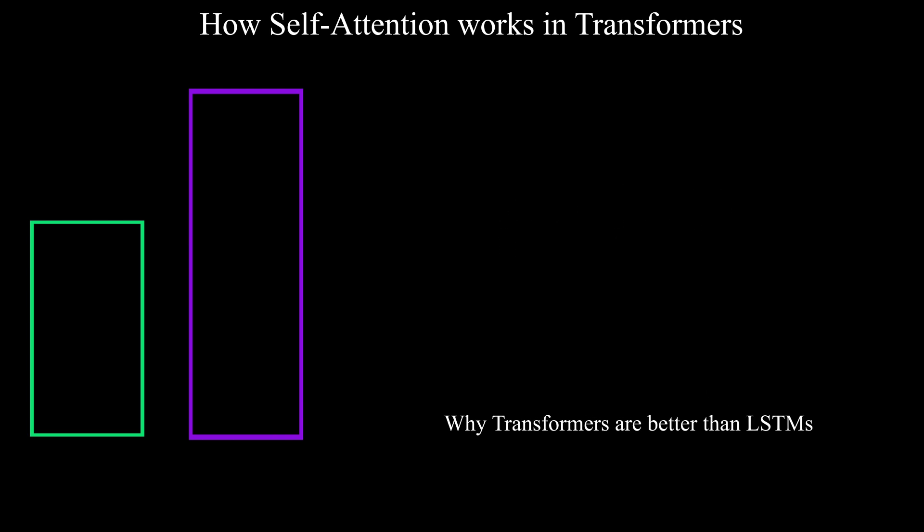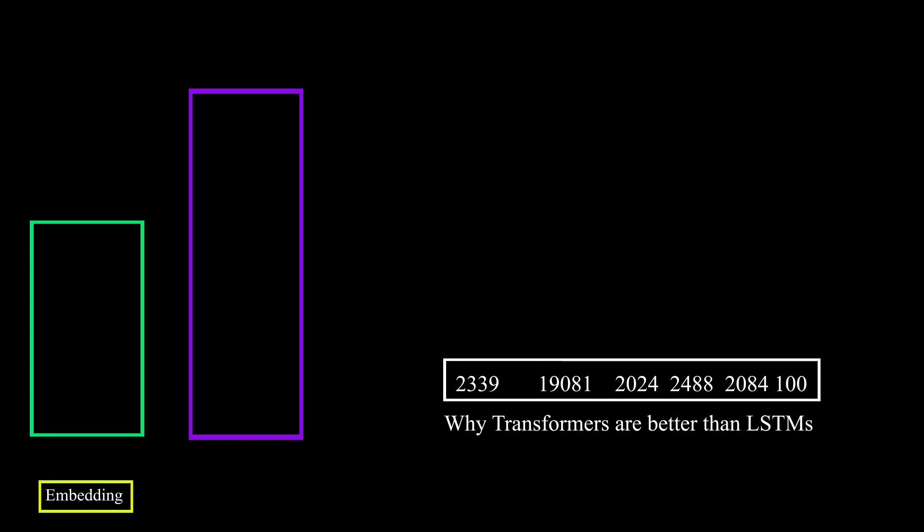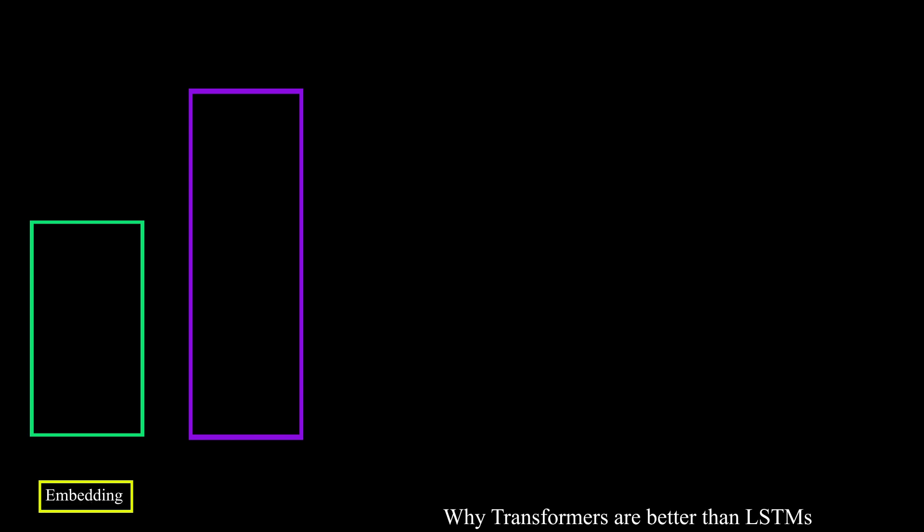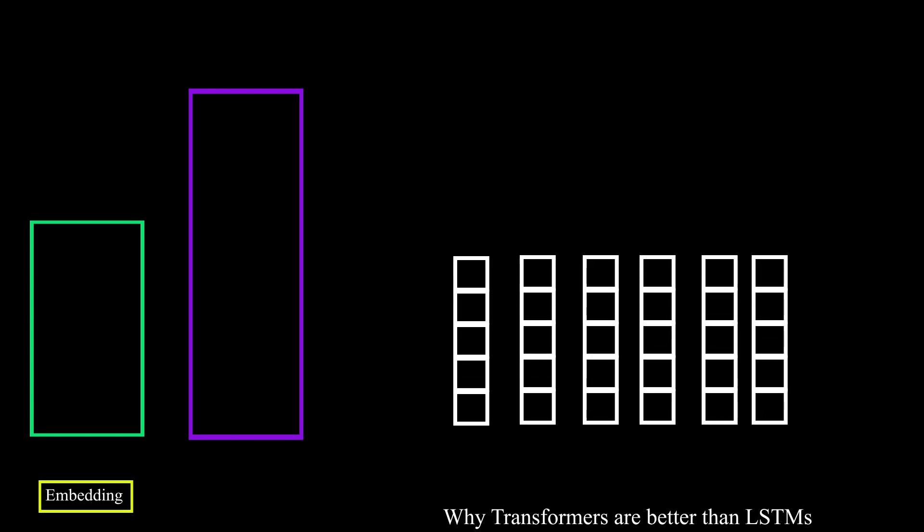So the first step is to tokenize the sentence before feeding it to encoder. Once it's done then feed the tokenized vector to embedding layer in the encoder. So the embedding layer will convert each token into a vector representation that will help the model to understand the relationship between words. And then the output from embedding layer will get through the positional encoding.